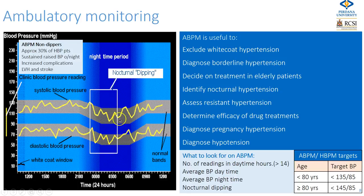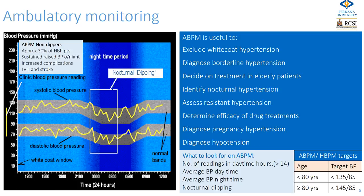This shows the diurnal circadian rhythm — at night time the pressures drop down; this is systolic, this is diastolic, and it drops down at night. This is called nocturnal dipping. Some patients don't show a dip — they're called non-dippers — and this is significant because it's related to uncontrolled hypertension and the likelihood of developing complications such as left ventricular hypertrophy and stroke, and may also be an indicator of underlying secondary hypertension.